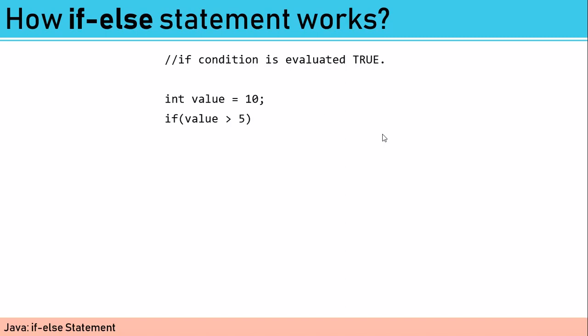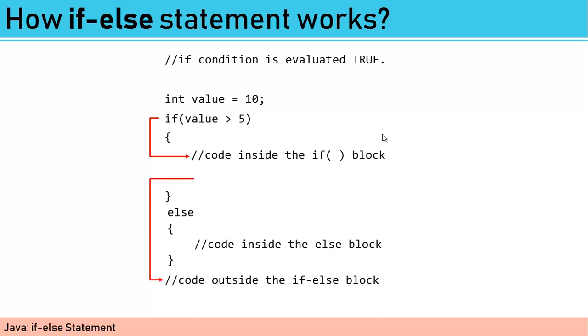It will be evaluated true because the assigned value for the value variable is equal to 10. So the condition inside the if-block will be executed. No matter how many lines of codes are there, it will be evaluated from the first line to the last line of code inside the if-block, and the execution after that will proceed outside the if-else block.